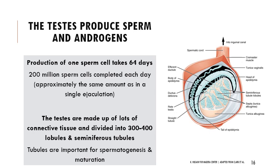Just a plug for common-sense sexual education: the production of one sperm cell takes about 64 days, but up to 200 million sperm cells can be dividing and maturing simultaneously — roughly the number in a single ejaculation. Just because an ejaculation happens during the day doesn't mean all the sperm are gone. People can absolutely get pregnant from a second ejaculation during the same day.